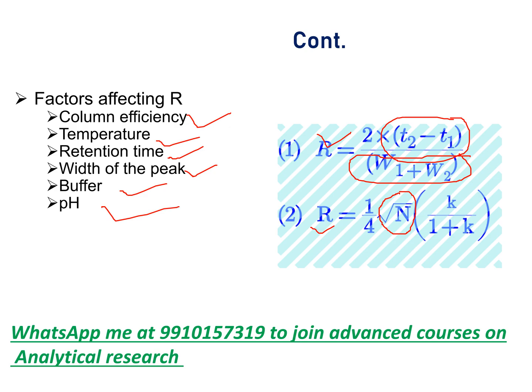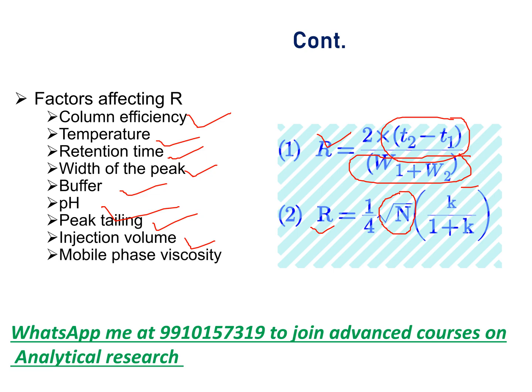pH — some compounds are highly sensitive to pH; at a particular pH they are getting separated, hence resolution is pH dependent. Peak tailing — on increasing peak tailing, resolution is decreased because peak width is increased. Injection volume or sample concentration — on increasing injection volume or sample concentration, resolution is decreased because peak width is increased. Mobile phase viscosity — on increasing mobile phase viscosity, resolution is decreased because peak width is increased.